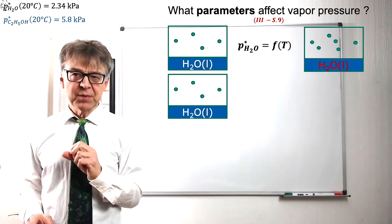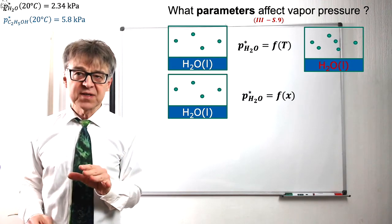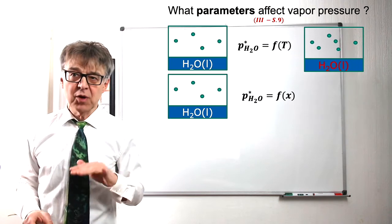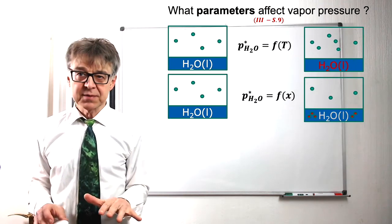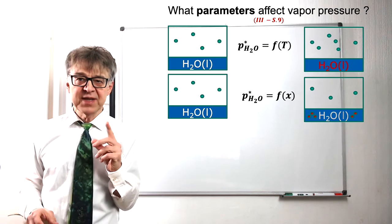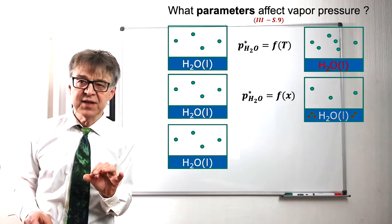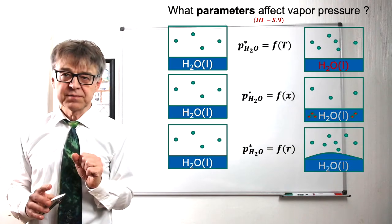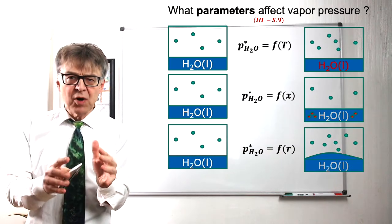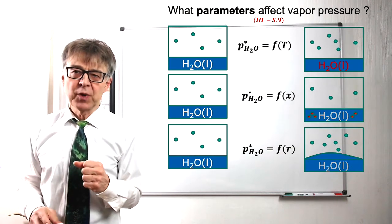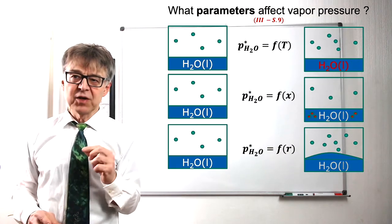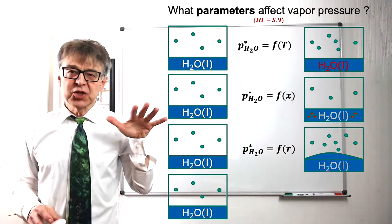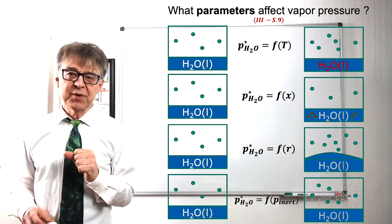The vapor pressure also depends on the purity of the phase. If we add another component to water and form a homogeneous mixture, the vapor pressure drops. The vapor pressure also depends to a very small extent on whether we have a flat surface or a curved surface. Over very small droplets, vapor pressure will be larger than over a flat surface. Vapor pressure also increases with an additional inert gas under high pressure.